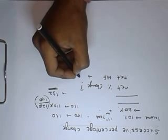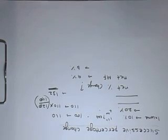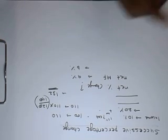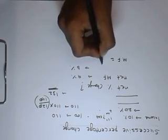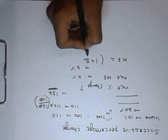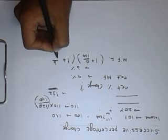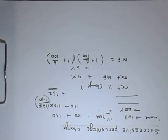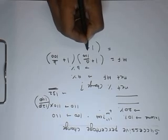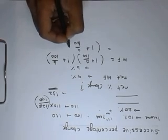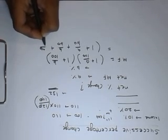If the first change is A percent and then we change by B percent, the net multiplying factor would be (1 + A/100) × (1 + B/100). After expanding, we get 1 + A/100 + B/100 + AB/10000.